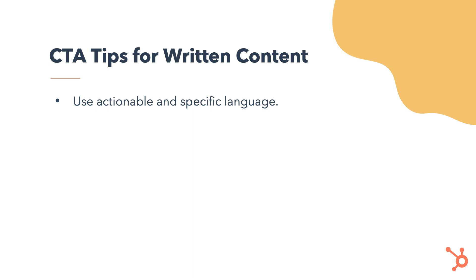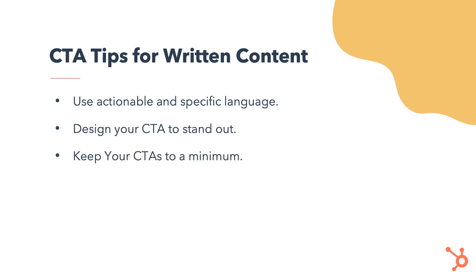For example, consider 'download free template' or 'request a demo' instead of vague CTAs like 'submit.' Also, design your CTA to stand out — give it a different color to contrast from the rest of the content, and make sure it's large enough to grab attention. Keep your CTAs to a minimum for each piece; one or two relevant CTAs can guide users on next steps without confusing them.